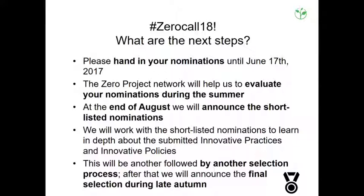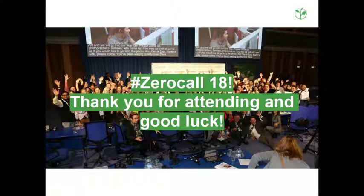What are the next steps? Please respect the deadline — June 17th. We will then start the evaluation process, and at the end of August we will announce the shortlisted nominations. We will work with the shortlisted nominations, ask questions, document practices and policies, write fact sheets, and compile live stories for the Zero Project report, which will be presented at the conference. A final selection will be done in late fall. We are looking ahead to almost six months of intensive work together with you — but let's start with the first step: hand in your nominations.